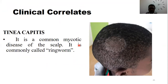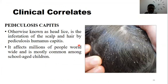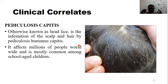Other clinical correlates include tinea capitis, where ringworm results from a fungal infection on the scalp. There is also pediculosis capitis — lice infestation. This happens when hair is bushy and not properly cared for; lice find it a comfortable place to live, causing itching on the scalp. Treatment involves creams to reduce the lice infestation and treating the whole household environment.